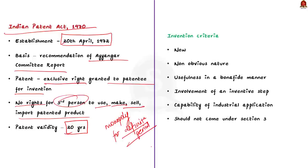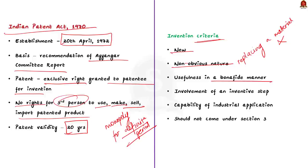If something has to be patented, the invention must meet some criteria. First, the invention must be new — it should be novel and non-existent. Secondly, the invention must be non-obvious; a mere change in technology will not give the right of a patent. For example, if you are replacing a lighter material in a known machine and claiming it is easy to carry, that cannot be patented. Thirdly, the invention must be useful in a bona fide manner. Fourthly, the invention must involve an inventive step. Fifthly, the invention must be capable of industrial application. Finally, the invention should not come under the non-patentable inventions listed under Sections 3 and 4 of the Indian Patents Act of 1970.